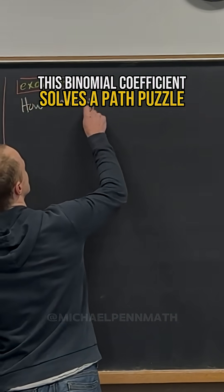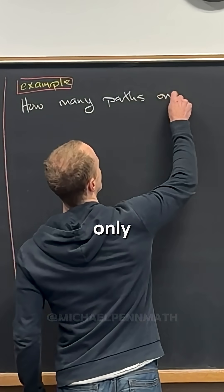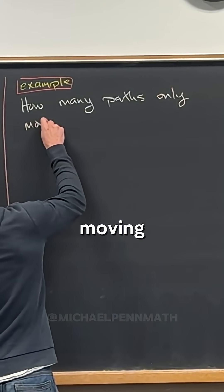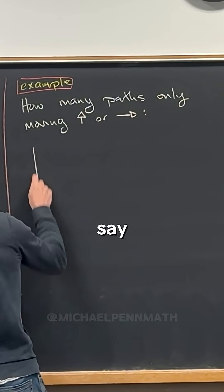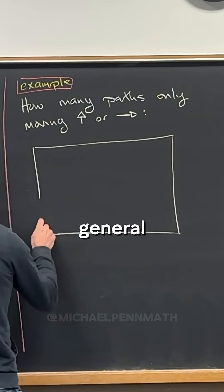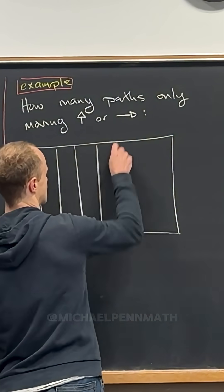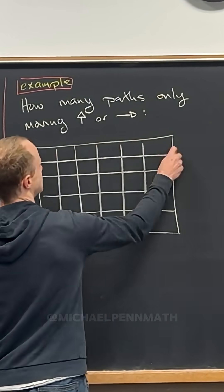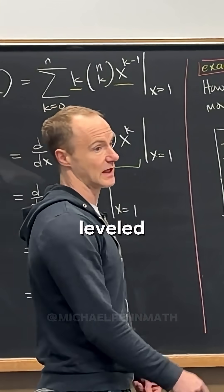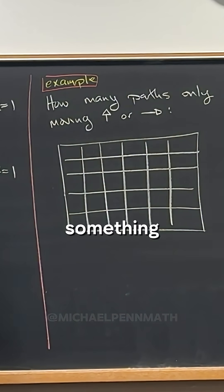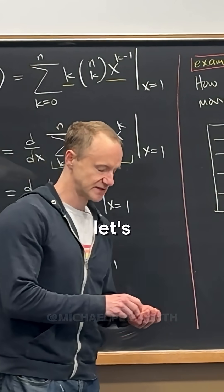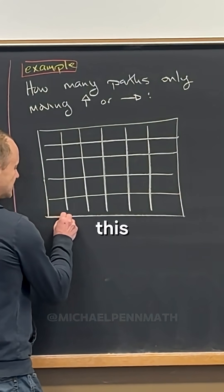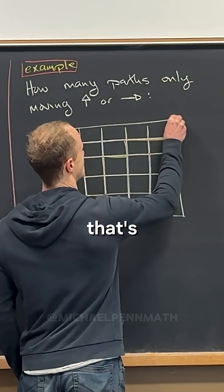Let's say how many paths, only moving up or right — we could make this a general shape, but let's just say it's this shape right here. There's a classic leveled-up version of this problem where you don't go above the diagonal, which involves Catalan numbers, but that's not what this is. Let's look at some allowed paths — that's an allowed path right there.